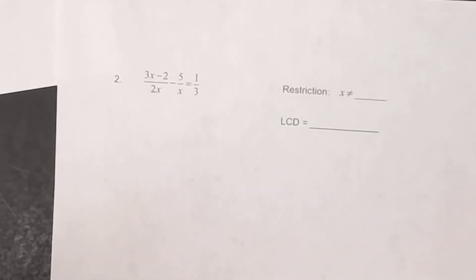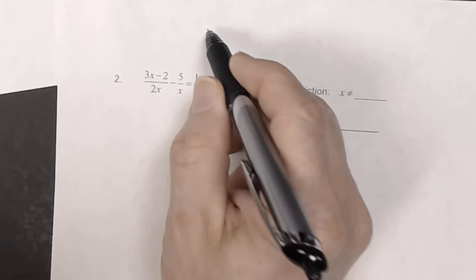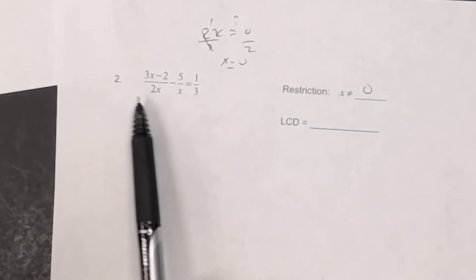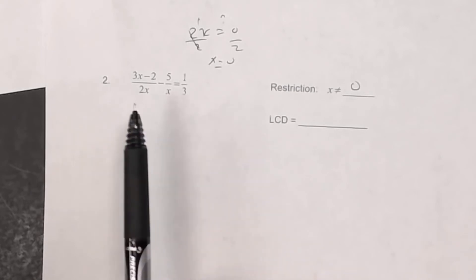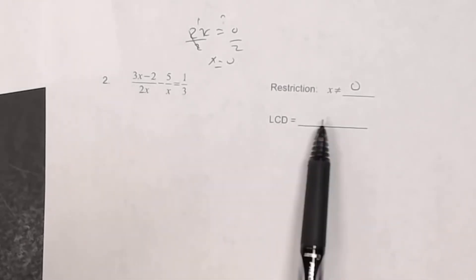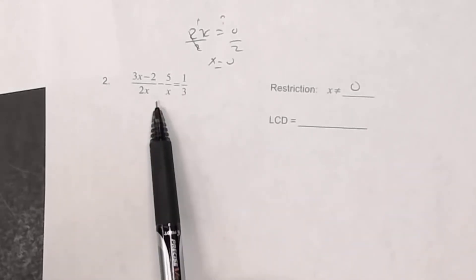For number two, there is a restriction because you cannot divide by zero. Ask yourself what value of x makes each denominator zero. The denominator 2x equals zero when x equals 0, so x cannot equal 0. The denominator 3 is always 3, never zero, so there is only one restriction: x cannot equal 0.